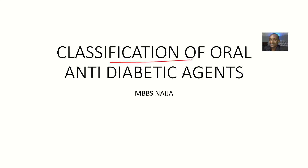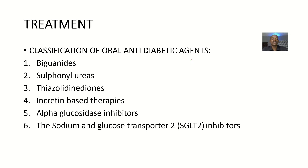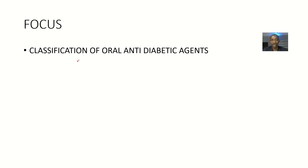So guys, here we are just trying to classify oral antidiabetic agents. For the classification, we are not actually going to list the examples — like examples of biguanides, we will not actually list it. But there will be a lecture on biguanides where we get to talk about the different types. So these are basically oral antidiabetic drugs — drugs that you use to actually treat diabetes mellitus.